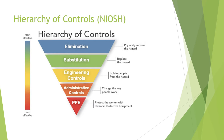This is just an introduction to the hierarchy of controls. Elimination and substitution all fit into engineering controls; the next step down is administrative controls, and then there's personal protective equipment. PPE is always our last line of defense — noted here as least effective to most effective.